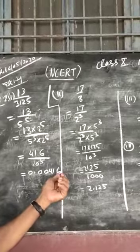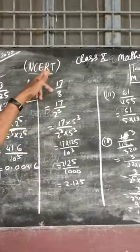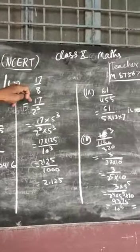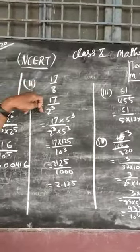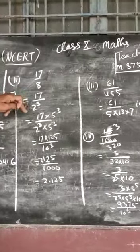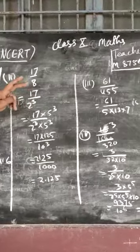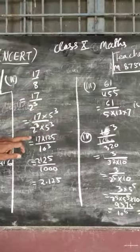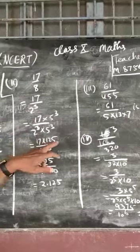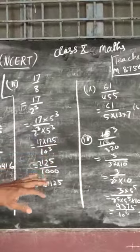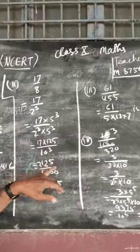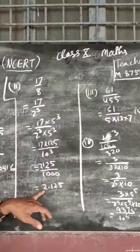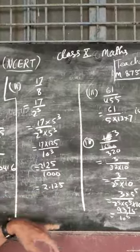Similarly, in part 2, it has 17 upon 8, which can be written as 17 upon 2 cubed. By multiplying 5 cubed in numerator and denominator, it becomes 17 × 125 upon 10 cubed, which becomes 2125 upon 1000, giving 2.125.